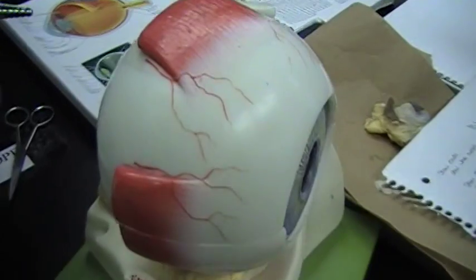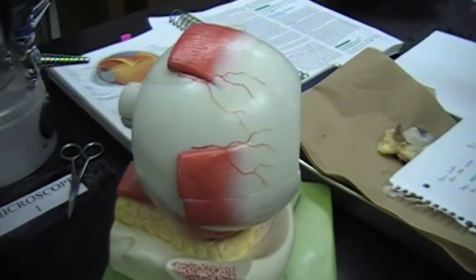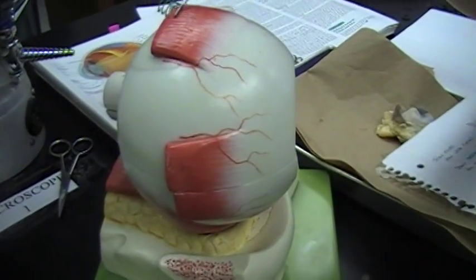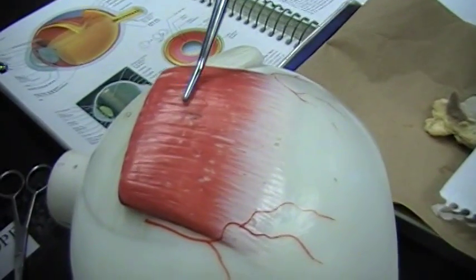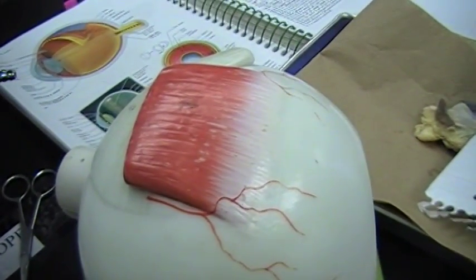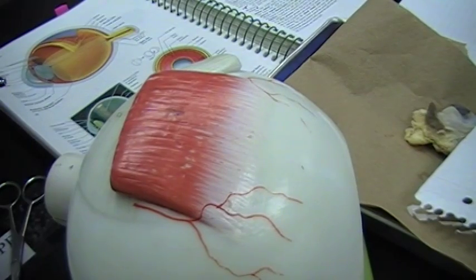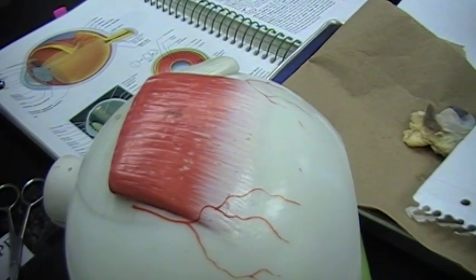The next muscle I'm going to show you is the superior rectus muscle, and it is shown on the model here. Its function is to elevate the eye and turn the eye medially, and it is controlled by the oculomotor nerve.